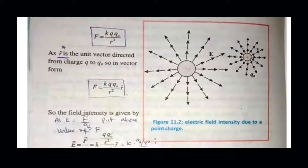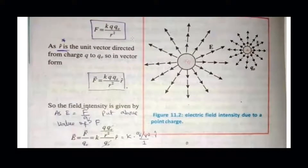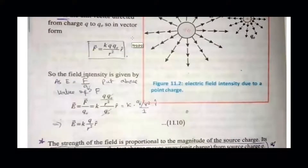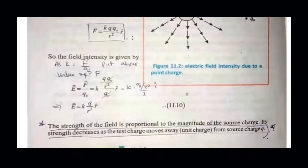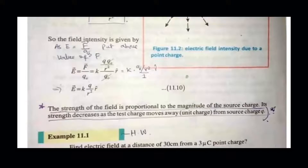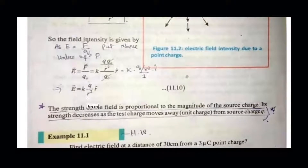According to Coulomb's law, force equals kqq₀/r², where r is the distance between the two charges, q is the source charge, and q₀ is the test charge. Using the electric field formula E = F/q₀, the q₀ in the numerator and denominator cancel, leaving E = kQ/r². This shows the magnitude of electric field is directly proportional to the source charge — more source charge means stronger electric field and greater influence on the test charge.